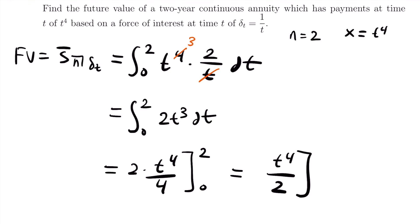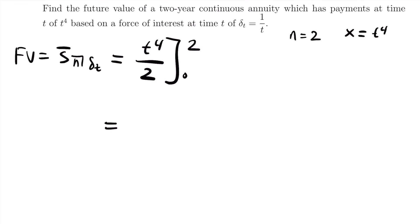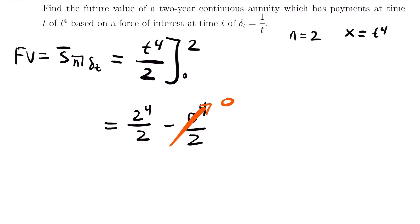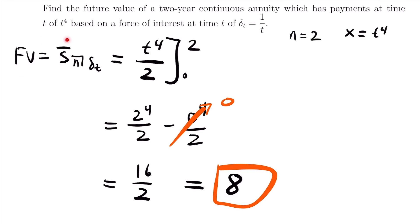Using the power rule: 2 times t⁴/4 evaluated from 0 to 2, which simplifies to t⁴/2 from 0 to 2. Evaluating: 2⁴/2 minus 0⁴/2. Since 0⁴/2 equals 0, and 2⁴ equals 16, this gives 16/2 equals 8. So the future value of this continuous annuity is 8. That was the last example for this video — if you have any questions feel free to leave them in the comments below.